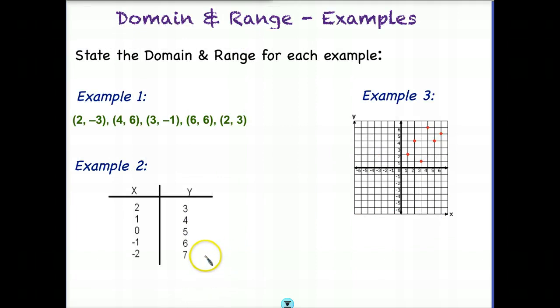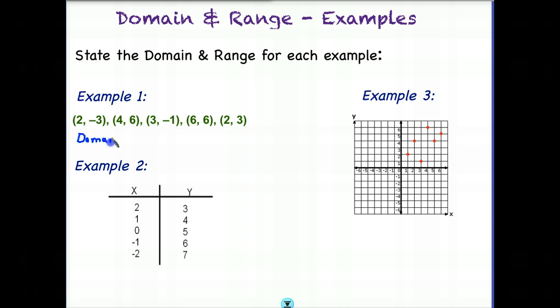Let's look at a few more examples and state the domain and range for each. In our first example, we have a list of coordinate points. To state the domain, we list x values in numerical order, listing only one of each number. So our domain: we have a 2, a 4, a 3, a 6, and another 2 — but we only list the 2 once. That's our lowest number, followed by a 3, then a 4, and finally a 6. That is our domain.